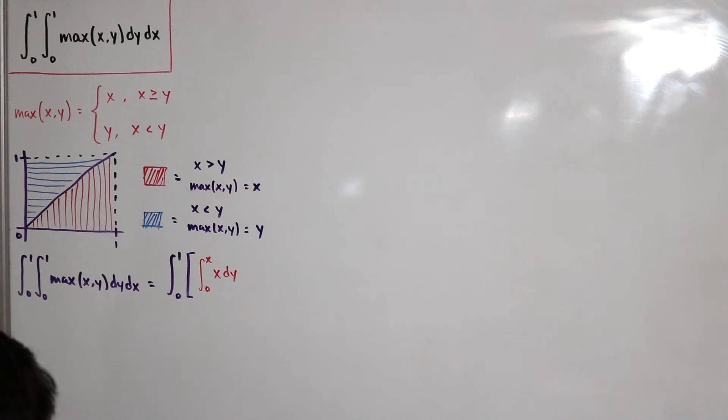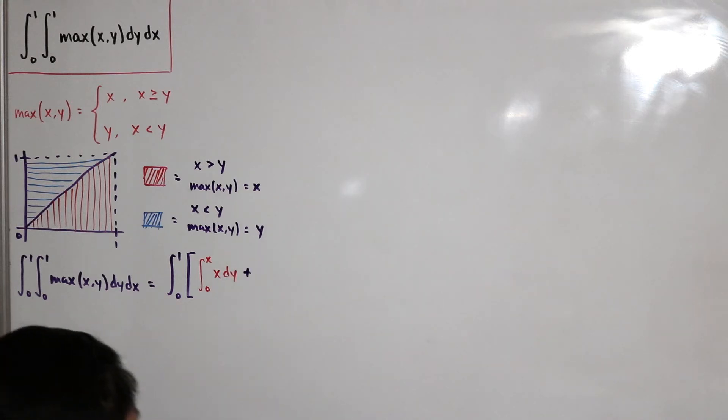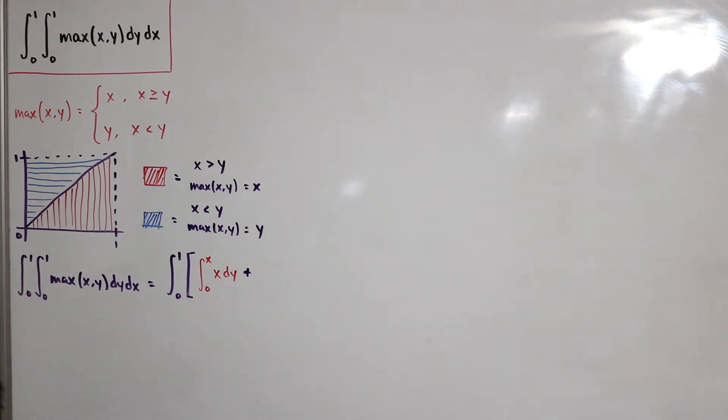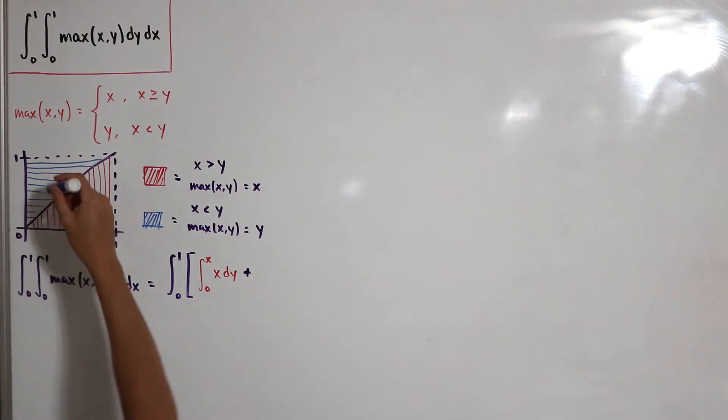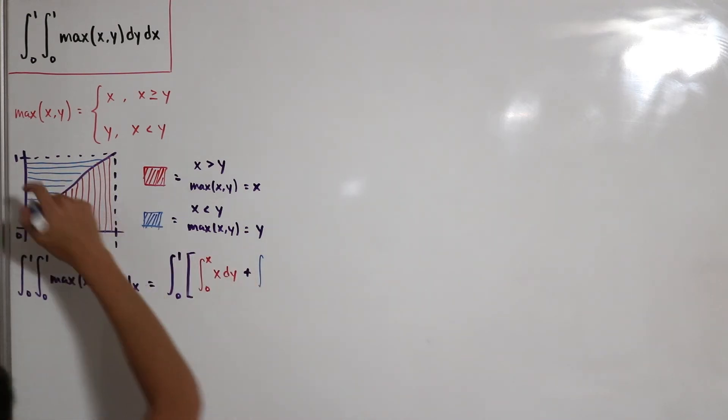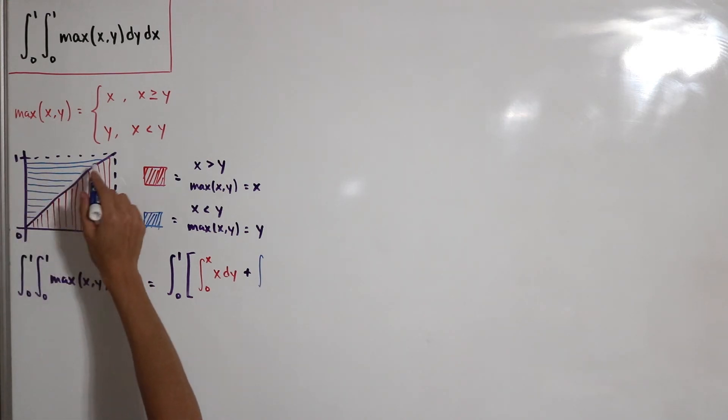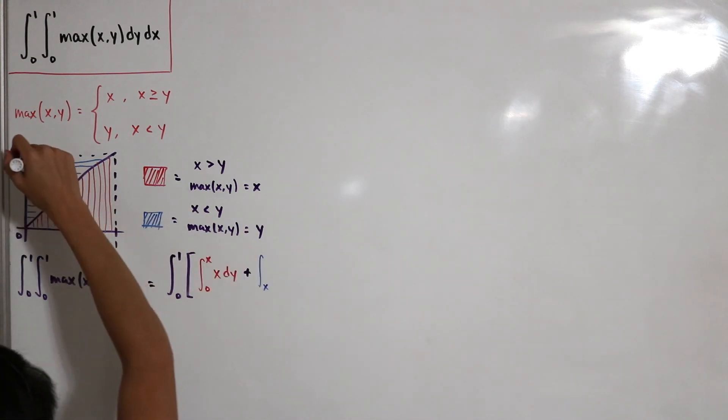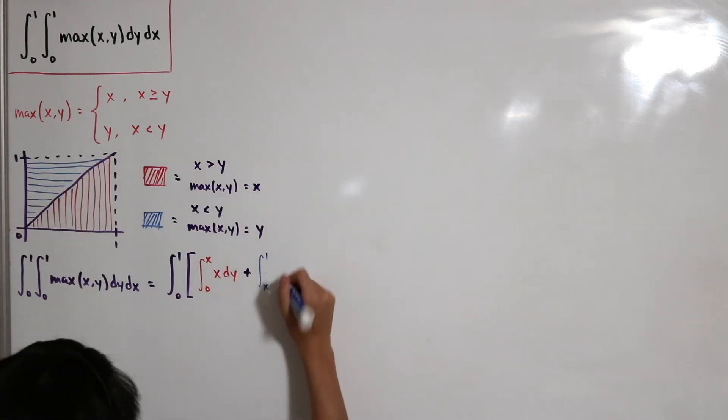That would be plus, now we're integrating this blue region in respect to y as well. We're integrating from between the bottom equation, which would be x, and then we stop at one of y dy.